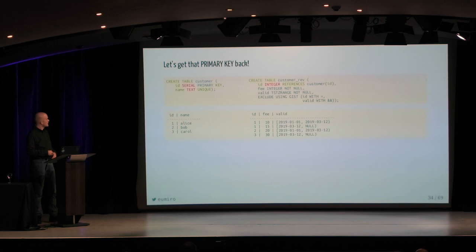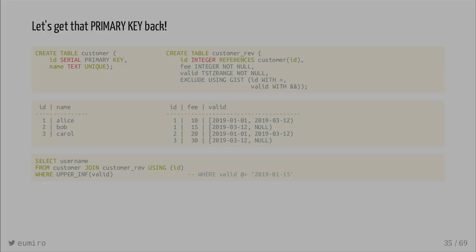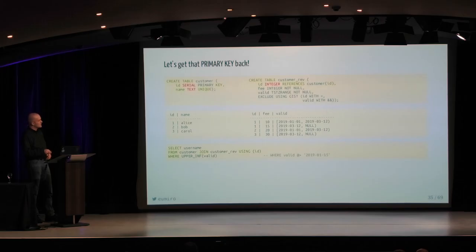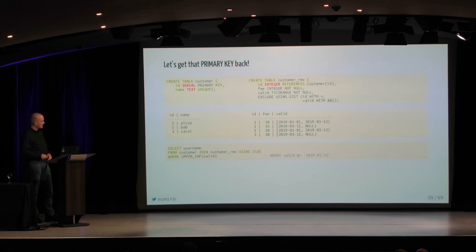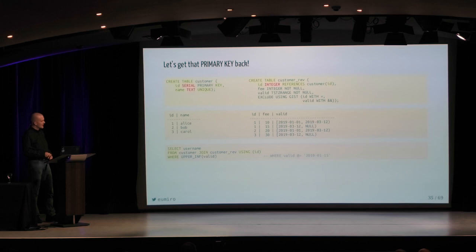So in this example, we see that we have our three customers — one, two, three — and then we have all our entries. If we want to do any selects on these two tables, we just join them, and then we say we want all the entries that are still valid. Since the upper limits of validities are always in the past for deactivated records, telling the database to give all entries where the upper edge is infinity gives us the information that only customers one and three are currently valid, because customer two has been deactivated. Or if you want to know the state of the database at some point in history, instead of filtering by upper=infinity, we just ask where 'valid' contains some date in history.